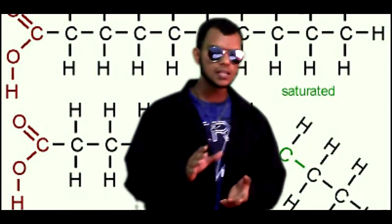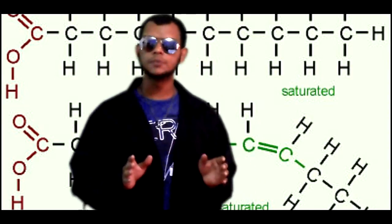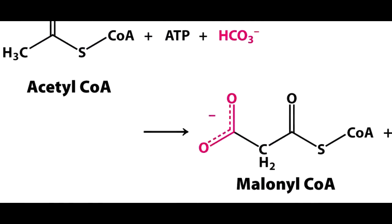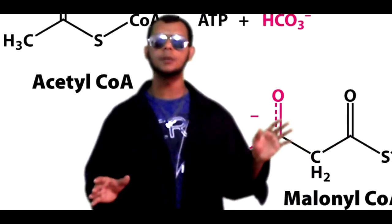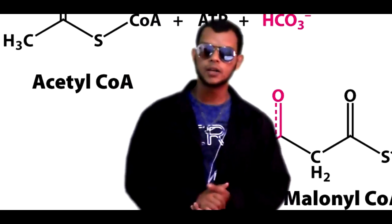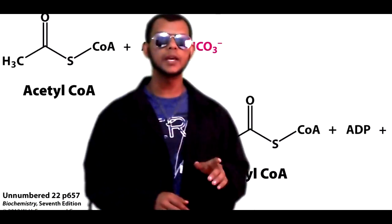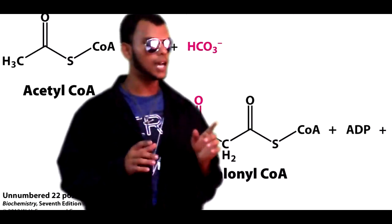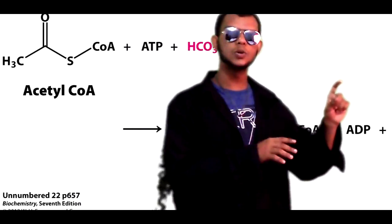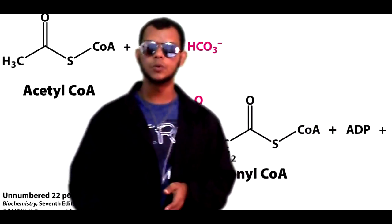The first step when the body is ready to produce fatty acids is it must convert acetyl-CoA into malonyl-CoA, a two-carbon compound into a three-carbon compound. Where does the extra carbon come from? The body uses carbon dioxide. An enzyme known as acetyl-CoA carboxylase will attach a carbon dioxide molecule to the acetyl-CoA, converting it into malonyl-CoA.